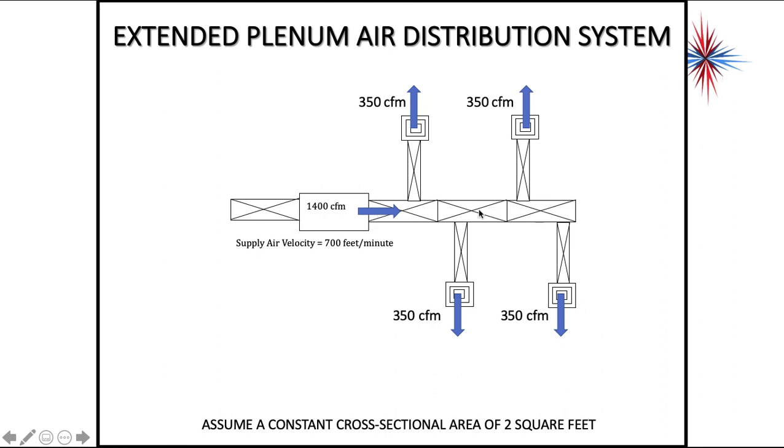So we know our supply quantity is 1,400 CFM. So we have to break this into 4, so each register is getting 350 CFM. 1,400 divided by 4 is 350. So it's a constant cross-sectional. That's an extended plenum system.